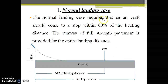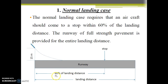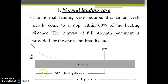The first is the normal landing case. In the diagram, the runway is shown with 60% of the landing distance and the total landing distance. The normal landing case requires that an aircraft should come to a stop within 60% of the landing distance — that is, it should cover 60% of the landing distance before coming to a stop on the runway. The runway of full-strength pavement is provided for the entire landing distance.